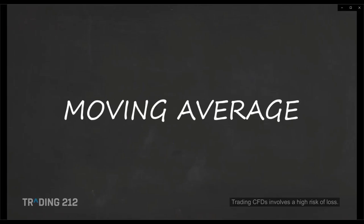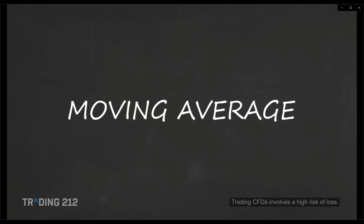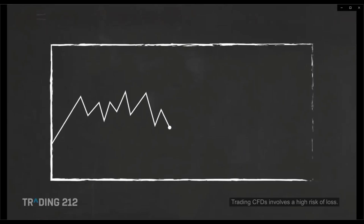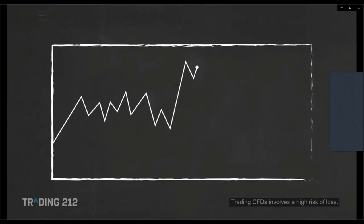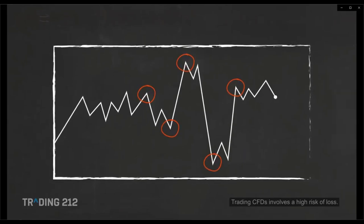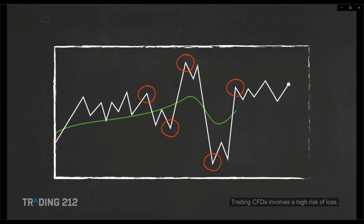The moving average is one of the most commonly used technical indicators. If you've spent even a little time looking at price charts, you'll notice the price of an instrument moves up and down. In fast moving markets the price may surge up only to plummet moments later, increasing the potential for false signals. The moving average helps filter out the noise from random price movements and smooth it out to see the average value.